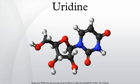Uridine is a glycosylated pyrimidine analog containing uracil attached to a ribose ring via a β-N1 glycosidic bond. It is one of the five standard nucleosides which make up nucleic acids, the others being adenosine, thymidine, cytidine, and guanosine.